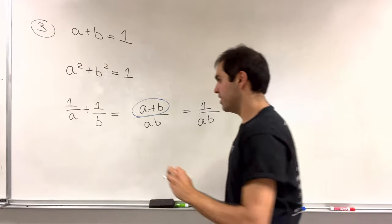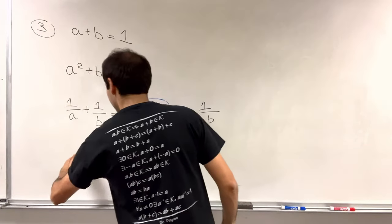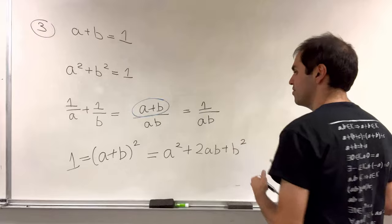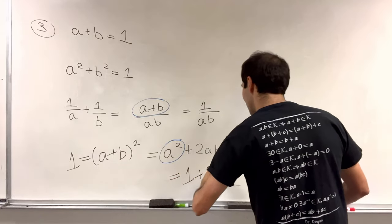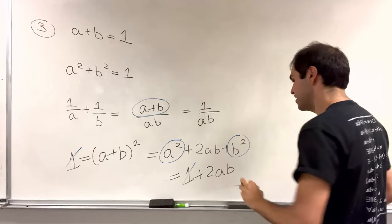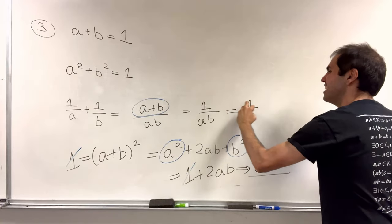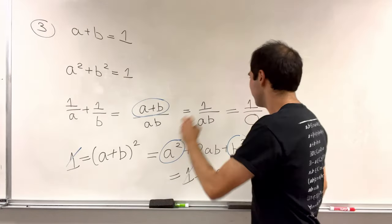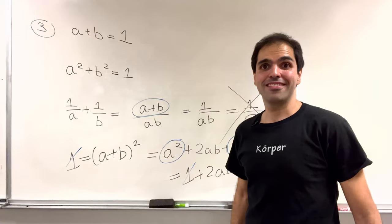But now, again, square this side. So on the one hand, a plus b squared, that is 1 squared, which is 1. But it's also a squared plus 2ab plus b squared. But a squared plus b squared is 1. So we get 1 plus 2ab. Then the ones cancel out, and we end up getting 2ab is 0, so ab is 0. Which is a little bit of a problem, because 1 over ab becomes 1 over 0. So, which here, again, is very ill-defined. So in this case, 1 over a plus 1 over b doesn't even exist, and it's certainly not 1.